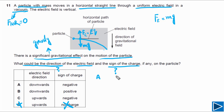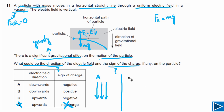Looking at all options one by one: for option A, the electric field direction is downward and the charge is negative. For a negative charge in a downward electric field, the force on the charge will be upward — opposite to the field direction. This means the electric force acts upward, balancing gravity. So this is a possible correct option.